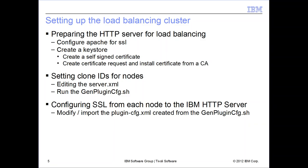This step is a bit confusing because you have to manually edit the config to put in your node information. When you generate the plugin config from node A, it will contain all node A information but won't include node B or node C. You'll have to manually add those entries to the plugin XML, using node A as an example.